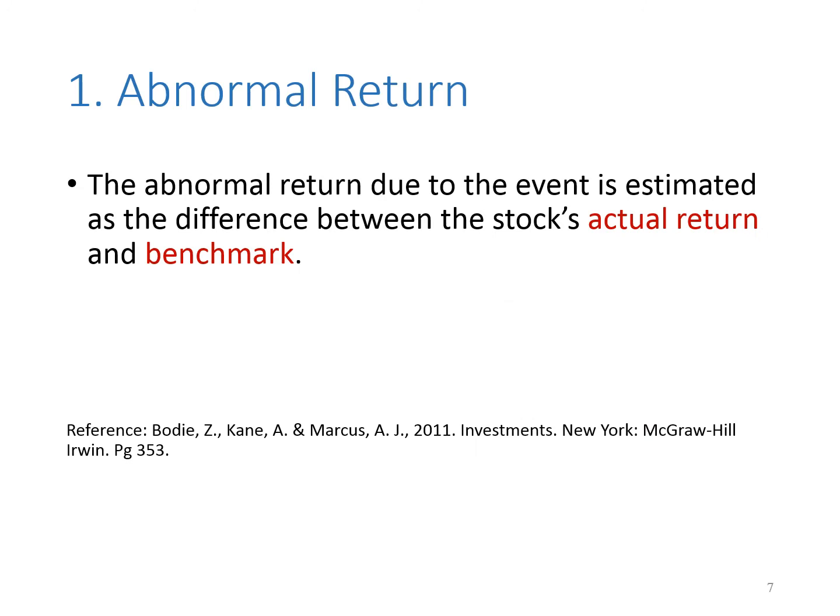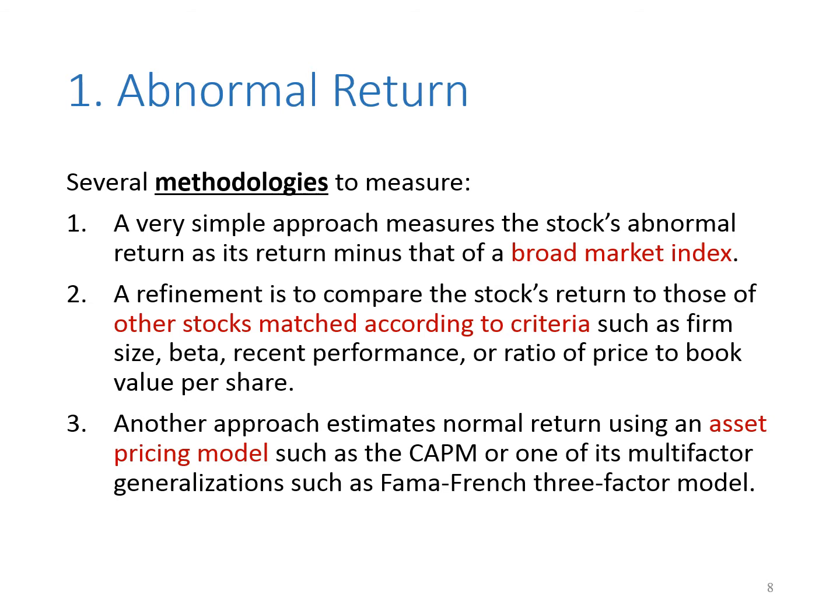Abnormal return is the difference between the stock's actual return and a benchmark. It is the above-average return that cannot be explained as compensation for added risk. The benchmark can be measured using several methodologies. We can use a broad market index or other stocks that match certain criteria such as similar firm size, beta, recent performance, or ratio of price to book value per share.